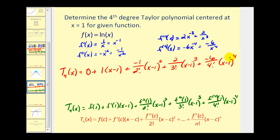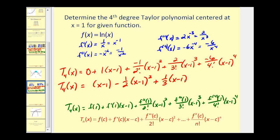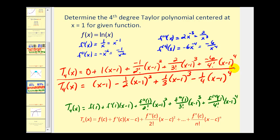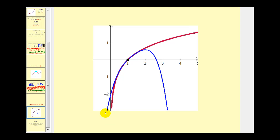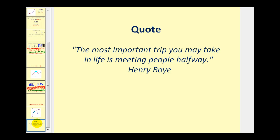Let's simplify and then check graphically. We have x minus one, minus one half times x minus one squared, plus one third times x minus one to the third, minus one fourth times x minus one to the fourth power. This is our degree four Taylor polynomial. Looking at the graph, the original function is in red and the degree four Taylor polynomial is in blue. Notice that as long as x is close to one, the blue polynomial is a good approximation of the original function. Thanks for watching.